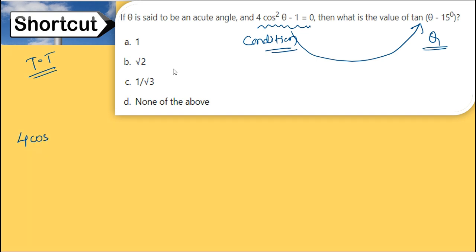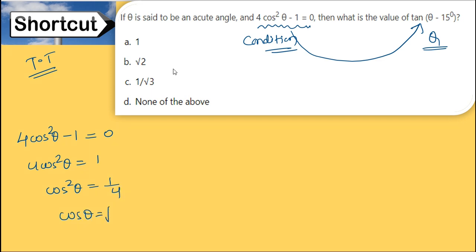Next problem: 4cos²θ - 1 = 0. Solving: 4cos²θ = 1, cos²θ = 1/4, cos θ = √(1/4) = 1/2.